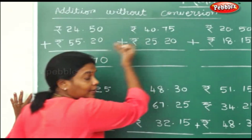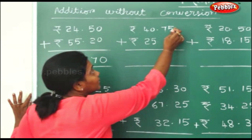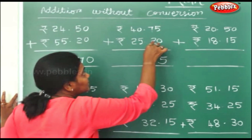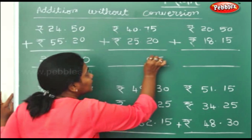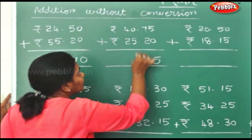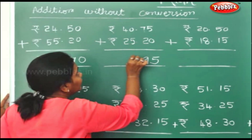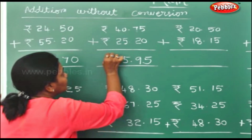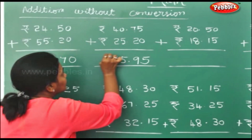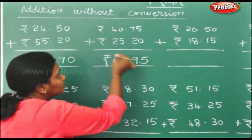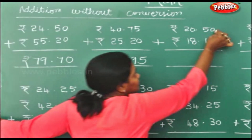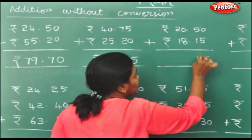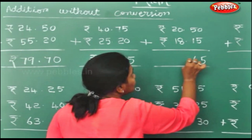You will start from the paise. 5. 7 plus 2 is 9. Carry down the 5. 4 plus 2 is 6. Rupees: 0 plus 5 is 5. 5 plus 1 is 6.